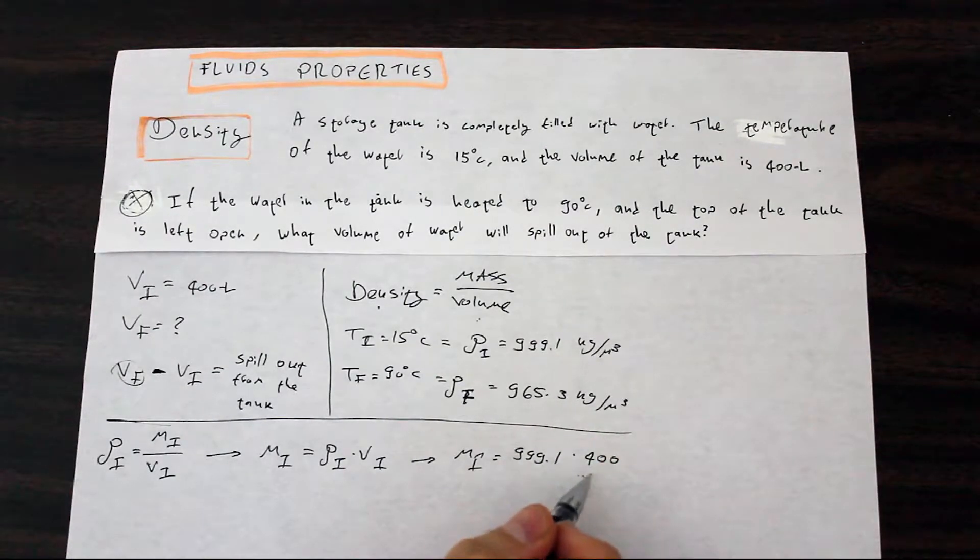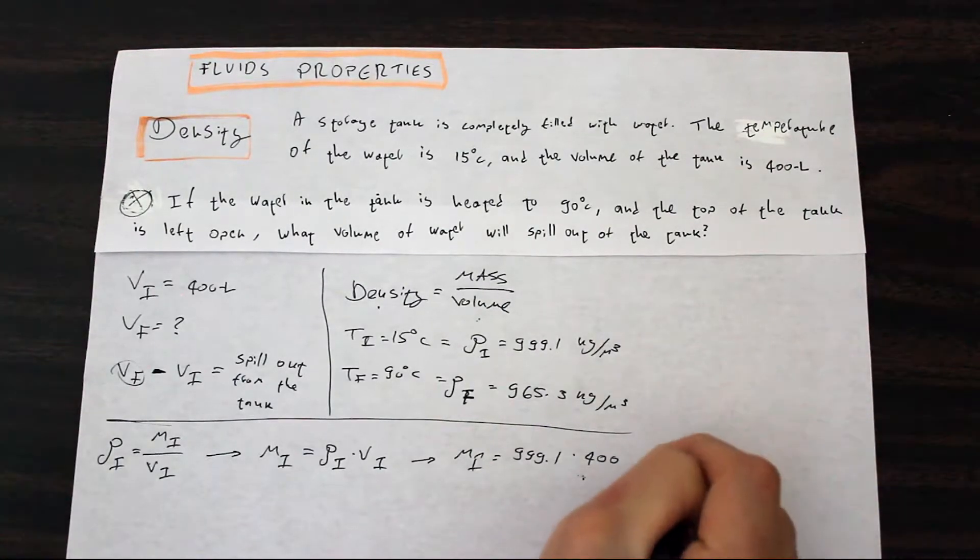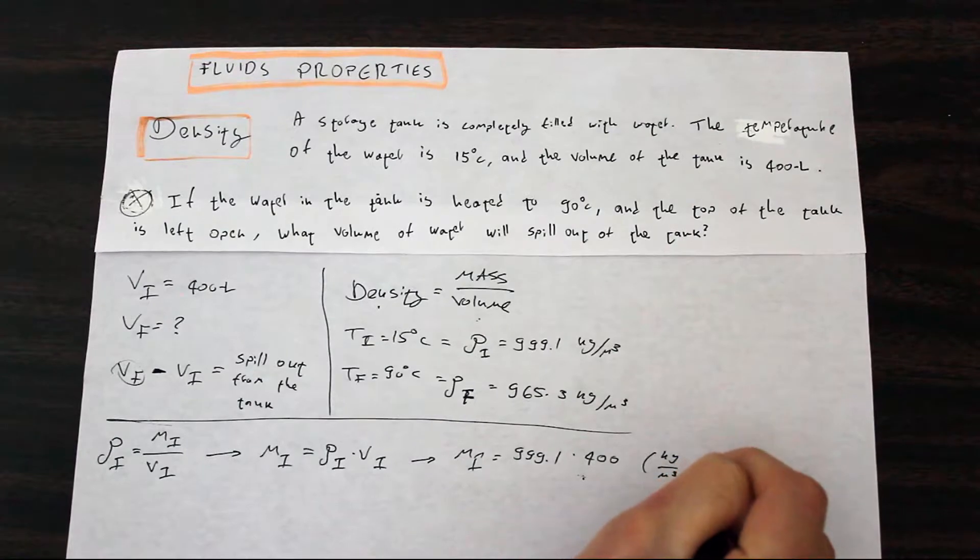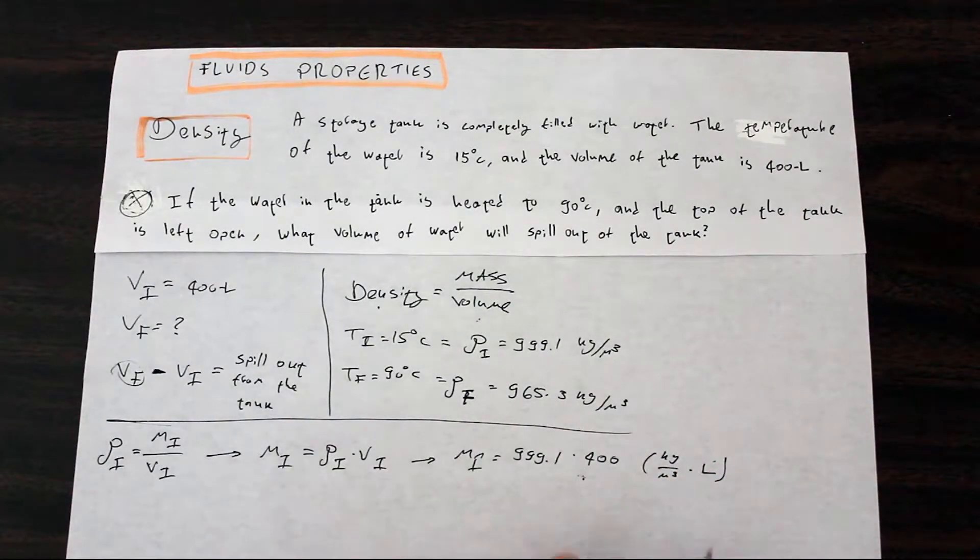And then we say that the initial mass is equal to 999.1 times 400. But notice, this is the trap in the question. This is a classic trap that they do. So, our units here is kilograms per meter cubed times liters, which is not the same units.